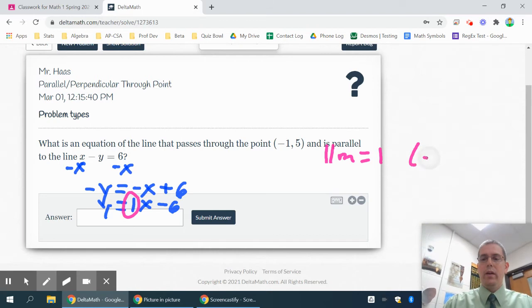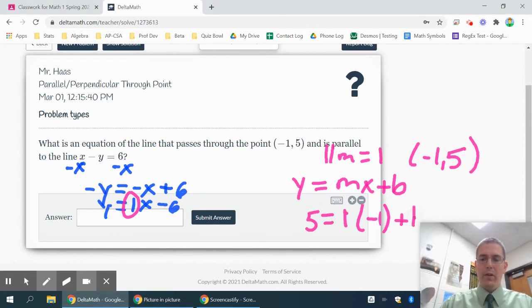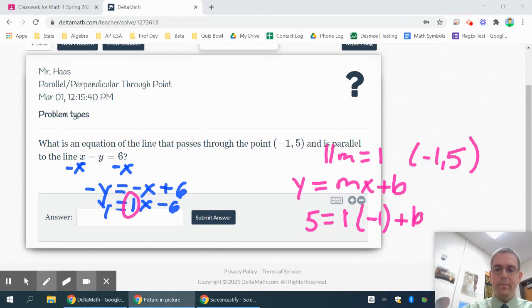And my point is the point negative 1, 5. Now I'm going to plug into y equals mx plus b. So y equals mx plus b to find my y-intercept. My slope is 1. My x value is negative 1. My y value is 5. So we did several of these problems a few weeks ago. This will be a good review.